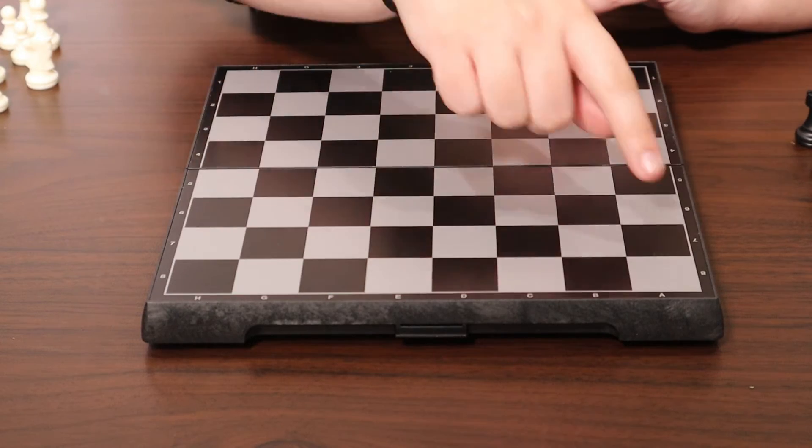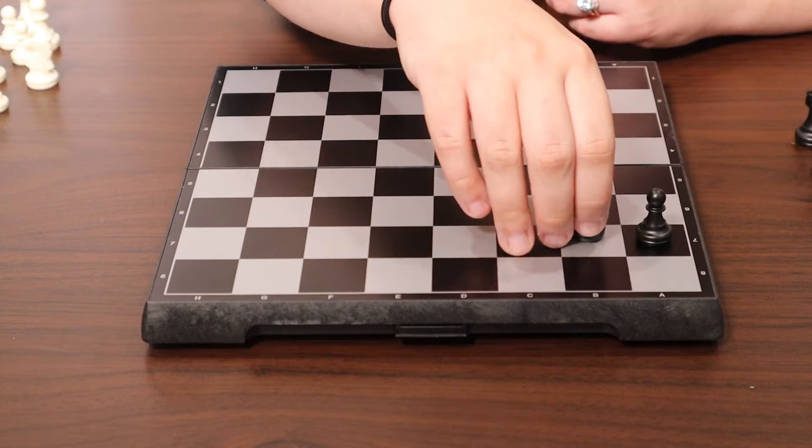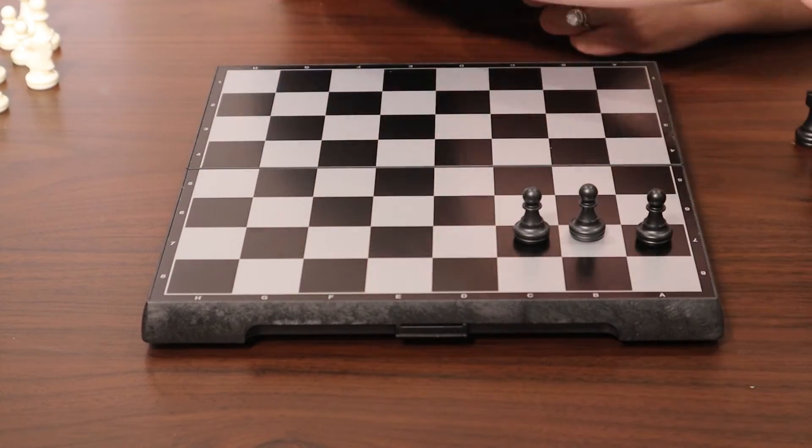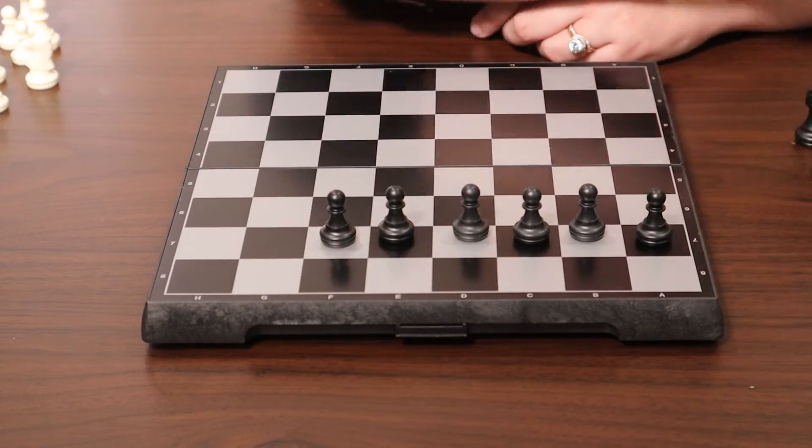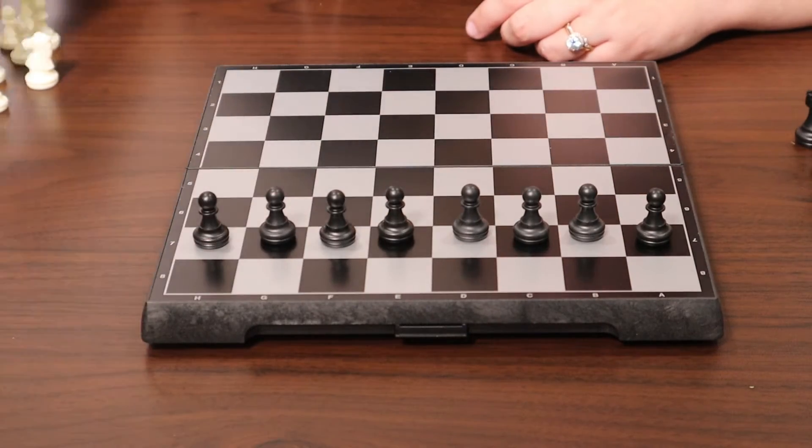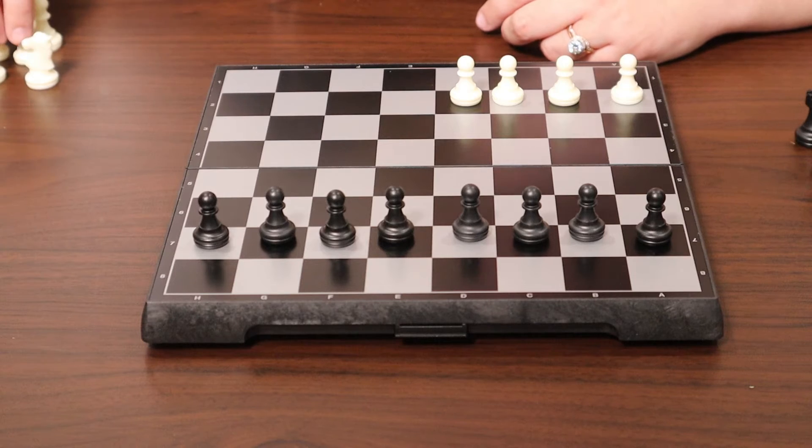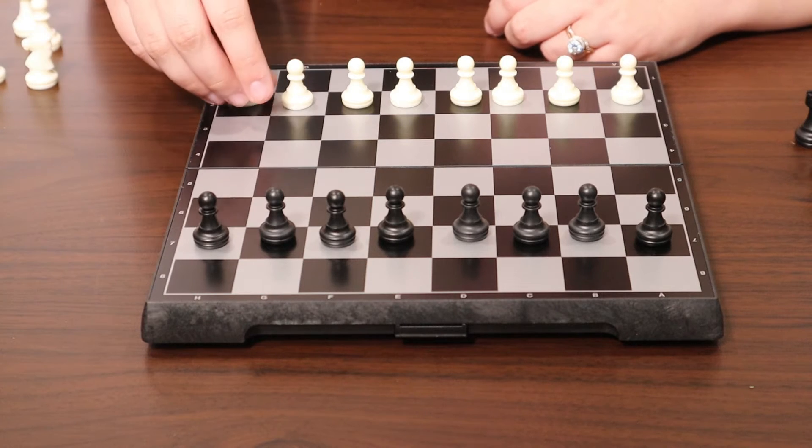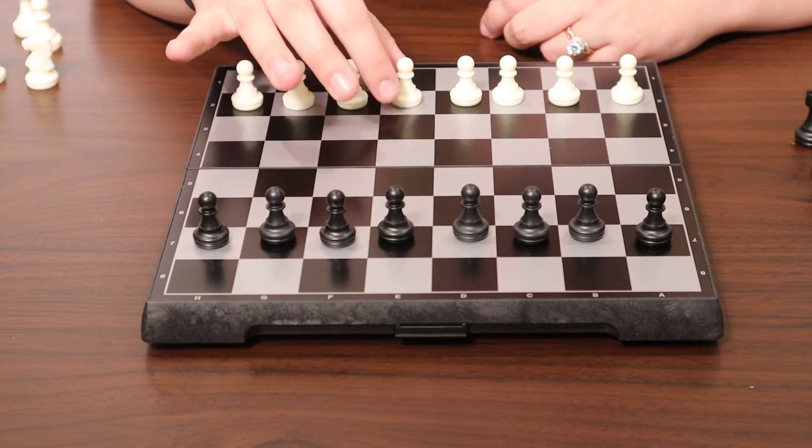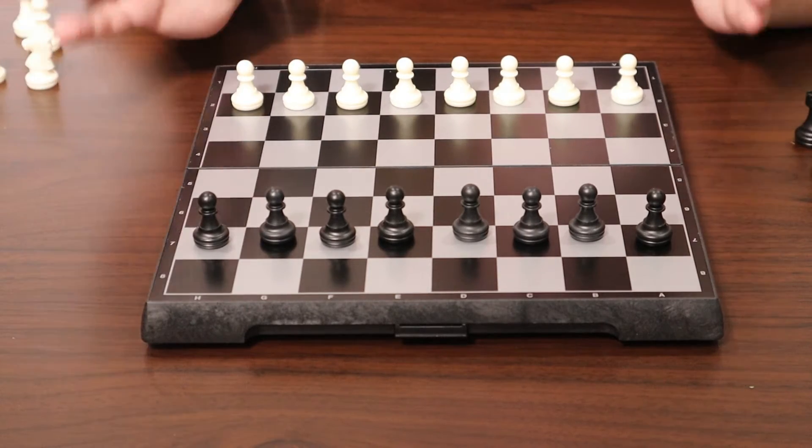So when you're setting up your board, the second row for each player is all pawns, and the pieces look the same for both players. They're just in different colors. So no matter what version of chess that you get, unless it's like the Lord of the Rings chess set, the pieces will look the same in different colors.